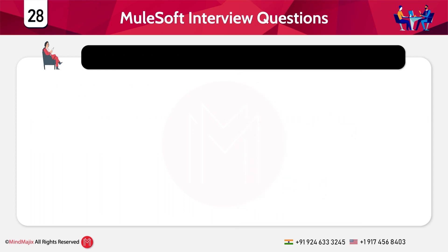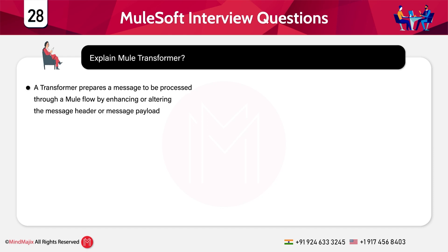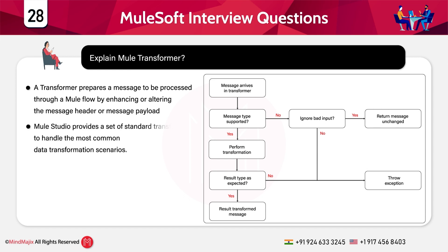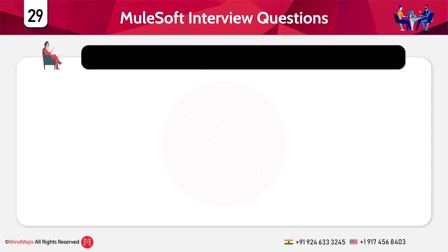Explain Mule transformer. A transformer prepares a message to be processed through a Mule flow by enhancing or altering the message header or payload. For example, if the message source receives data in XML format but a downstream message processor requires JSON-formatted data, one or more transformation steps between the message source and message processor can achieve the necessary translation. Mule Studio provides a set of standard transformers to handle the most common data transformation scenarios.